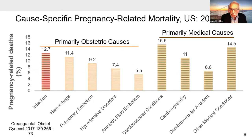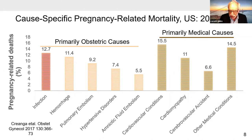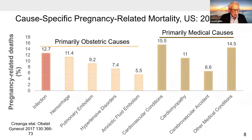As shown on the right panel, the leading causes of pregnancy-related mortality are medical causes — in aggregate, cardiovascular diseases, cardiomyopathy, stroke, and other medical conditions. But if we look at the left panel, we see that among the primarily obstetric causes, infection and sepsis are the leading causes, outranking hemorrhage, pulmonary embolism, hypertensive disorders, and amniotic fluid embolism. These are late data from the Centers for Disease Control.